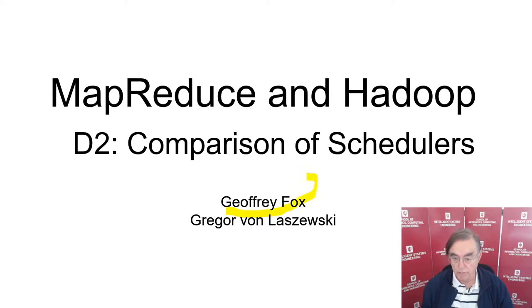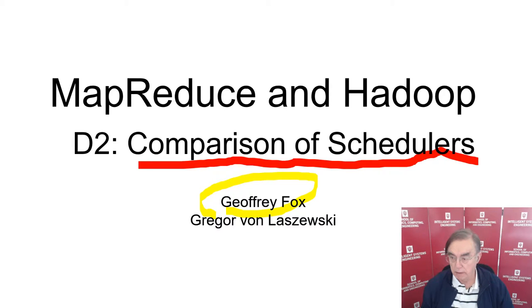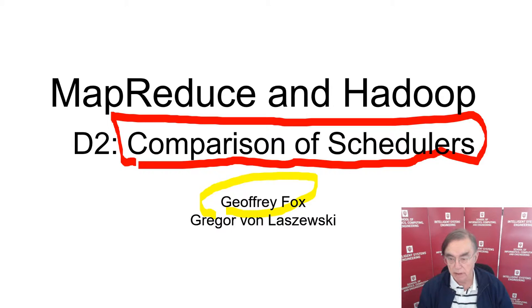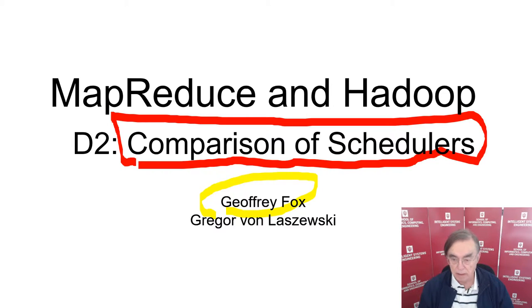Hello, I'm Geoffrey Fox, and I'm going to discuss here a comparison of schedulers. Part of the purpose of these slides is to give an overview of what it takes to build a distributed system. In the case of Hadoop, it has a scheduler called Yarn, so the purpose of this is to put Yarn in its place and discuss the features of schedulers that are necessary.